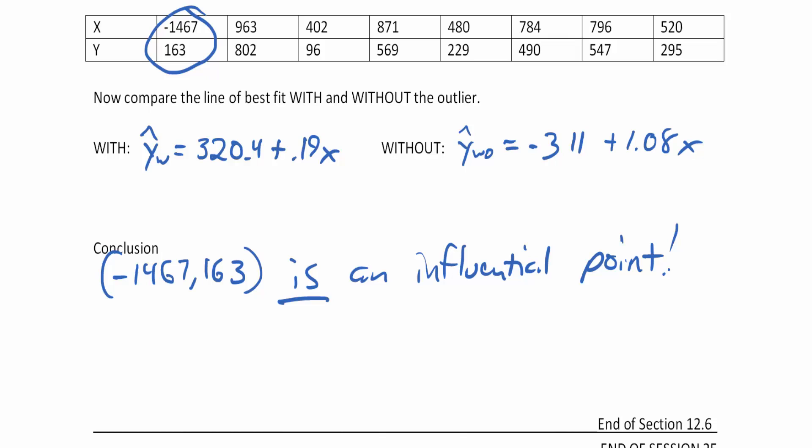And, again, we didn't use any kind of super statistical way of saying, well, it has to be this far away. You can make a best guesstimate and see, okay, 320 is a lot different than negative 311. And so is this slope from this slope. So definitely an influential point. And I thank you for watching this final video.